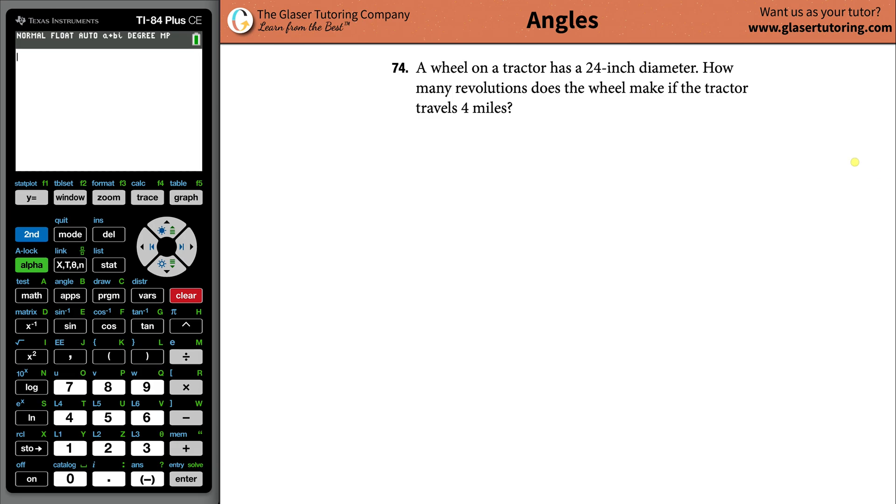Number 74: A wheel on a tractor has a 24-inch diameter. How many revolutions does the wheel make if the tractor travels four miles? Alright, let's take a look at the tractor tire. Here's a tire, and they tell us the diameter of that tire is going to be 24 inches.